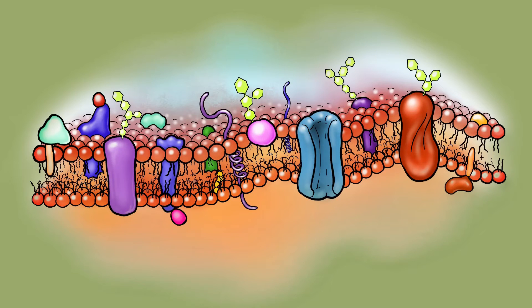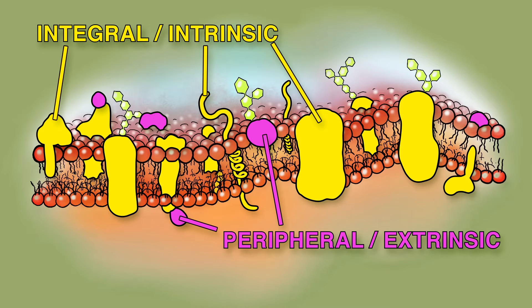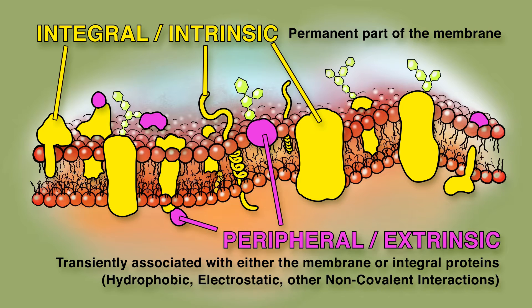Membrane proteins come in two flavors: integral, or intrinsic, and peripheral, or extrinsic. Integral membrane proteins are a permanent part of the membrane, while peripheral proteins are only transiently associated with either the membrane or integral proteins, where these associations are hydrophobic, electrostatic, or other non-covalent interactions.